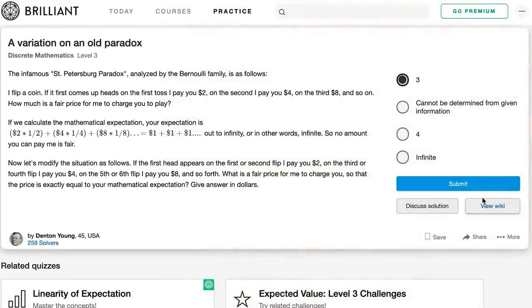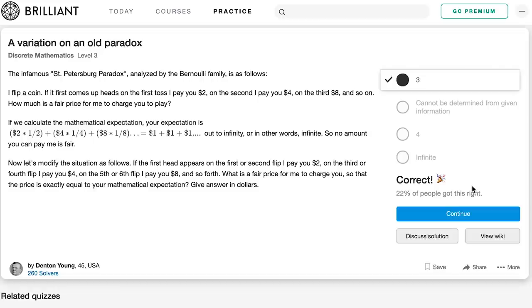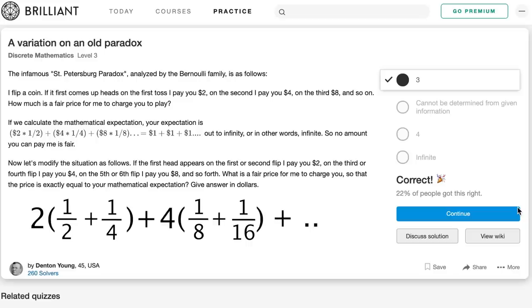Well, the new answer is $3. Because if we calculate the expected value where we get $2, 1/2 plus 1/4 of the time, along with $4, 1/8 plus 1/16 of the time, and so on forever, this results in an infinite series that converges to 3. So yes, with that seemingly slight change in payouts, the expected value is now completely different.